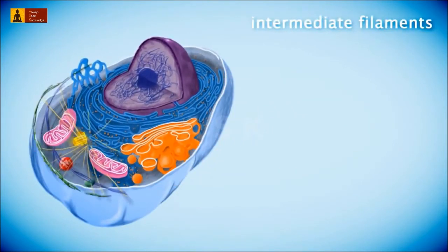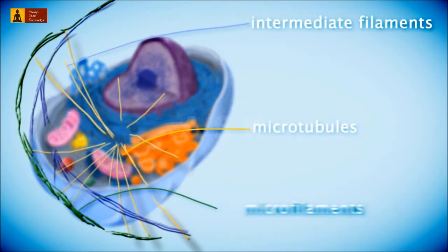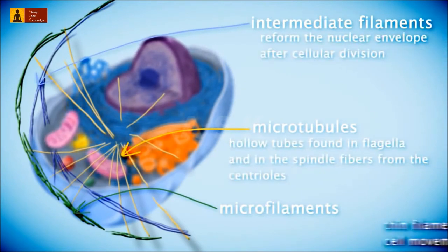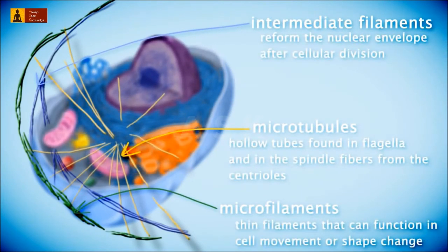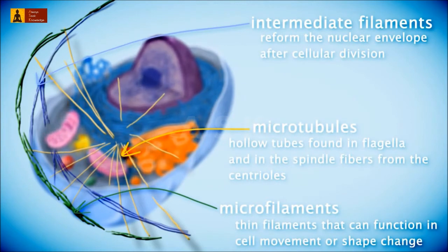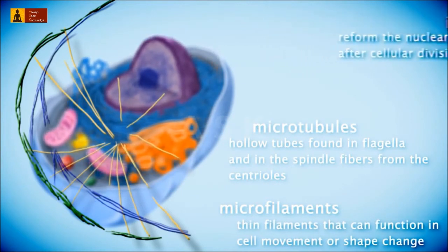The cytoskeleton helps hold the cell together and enables it to keep its shape. It is a network of fibers that organizes structures and activities of cells. The components that make up the cytoskeleton of animal cells are microtubules, microfilaments, and intermediate filaments.